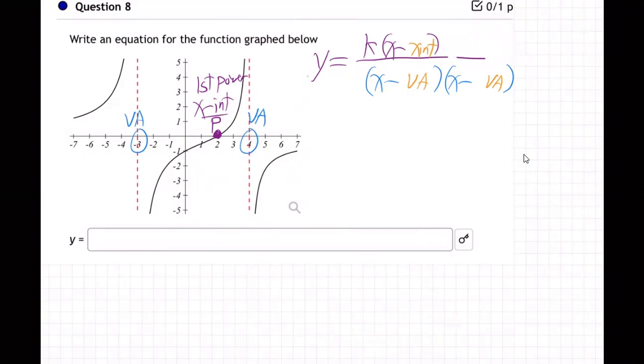So okay, so it's y equals, okay, x-minus. So what's the x-intercept? Two. It's the only x-intercept, the only place the graph ever hits the x-axis. And on the bottom we have x-minus, x-minus. What are our two vertical asymptotes? Negative three and four, either order. Negative three here and the four there. Okay, so that's the basic setup.